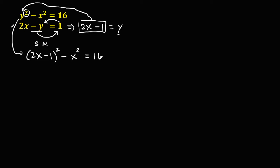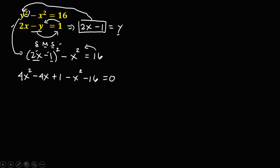Using the square of a binomial method: the square of the first term, 2x, gives 4x squared. Then 2 times negative 1 times 2x gives negative 4x. The square of the last term, 1, gives 1. Copy negative x squared, then transpose 16 to get negative 16 equals 0. Combining like terms: 4x squared minus x squared gives 3x squared, then negative 4x, and 1 minus 16 gives negative 15, so 3x squared minus 4x minus 15 equals 0.